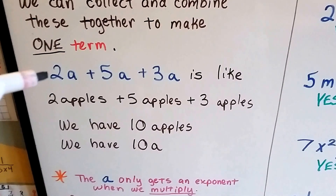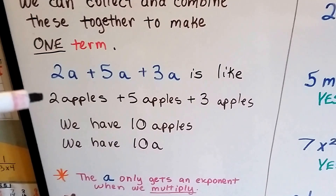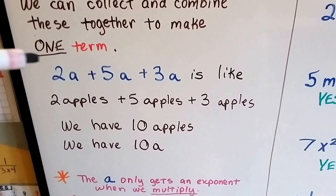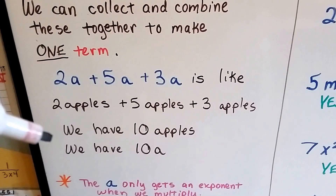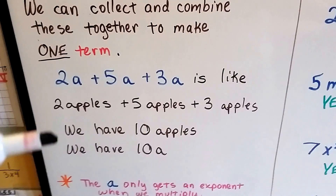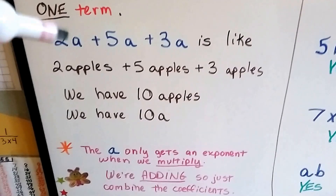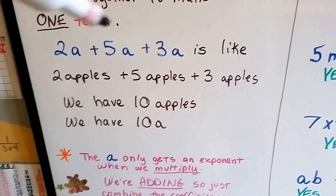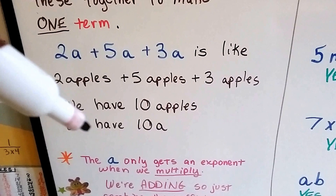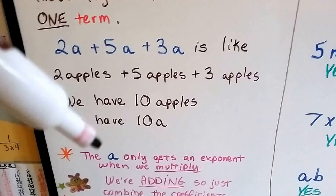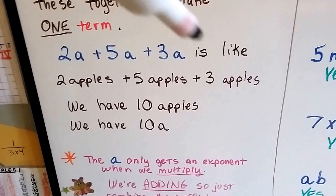We have 2a plus 5a plus 3a, and it's like saying 2 apples plus 5 apples plus 3 apples. We add the coefficients — 2 plus 5 plus 3 — and we get 10. It's like having 10 apples, or 10a. The a just goes along for the ride, because they're all alike. Don't worry about putting exponents, like putting this to a third power, because there's three a's — we don't do that. We're adding.